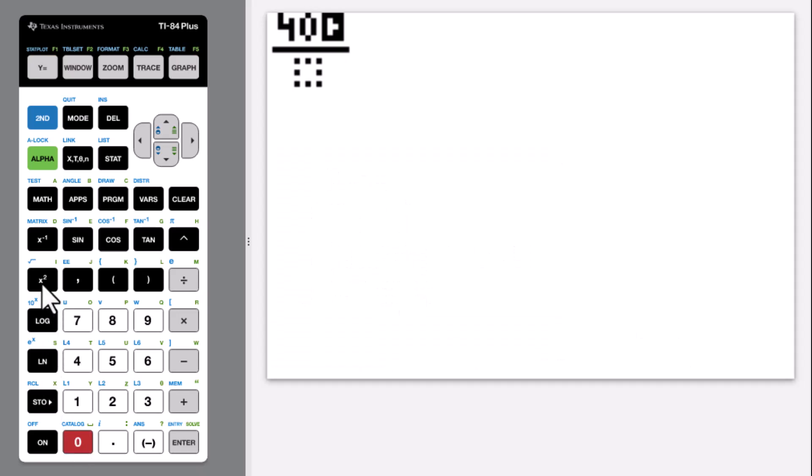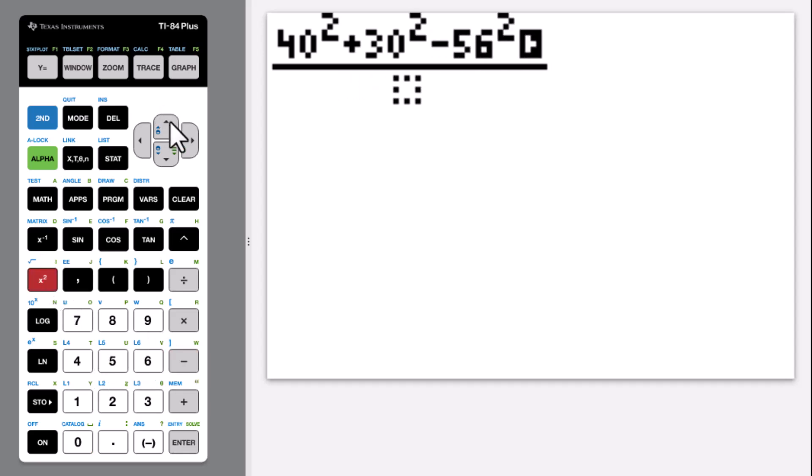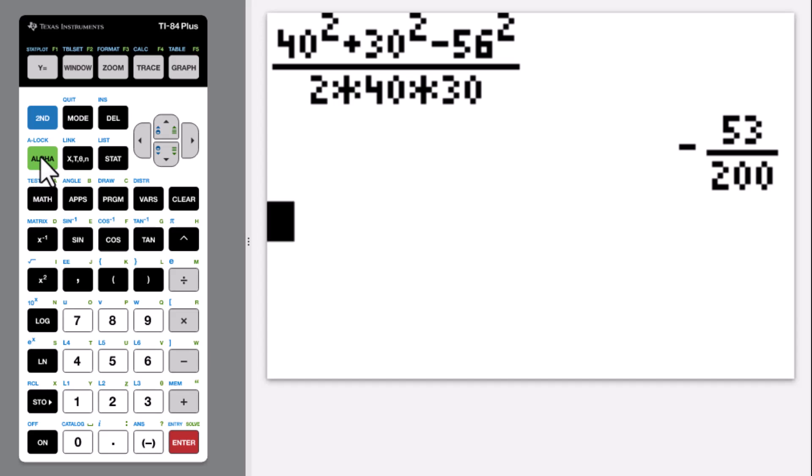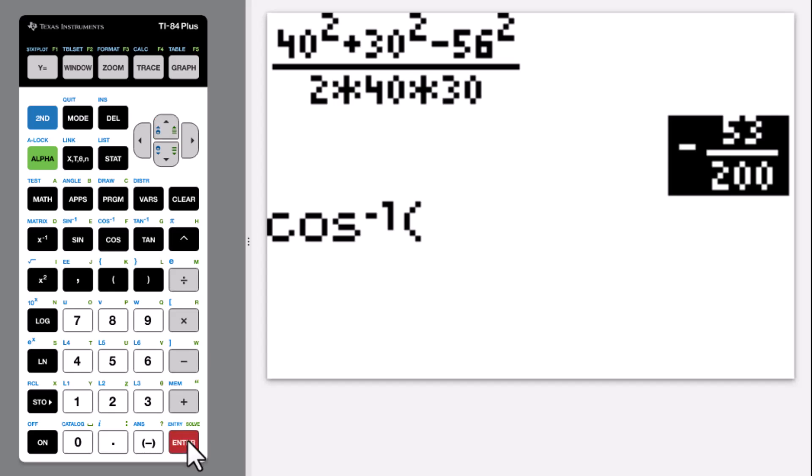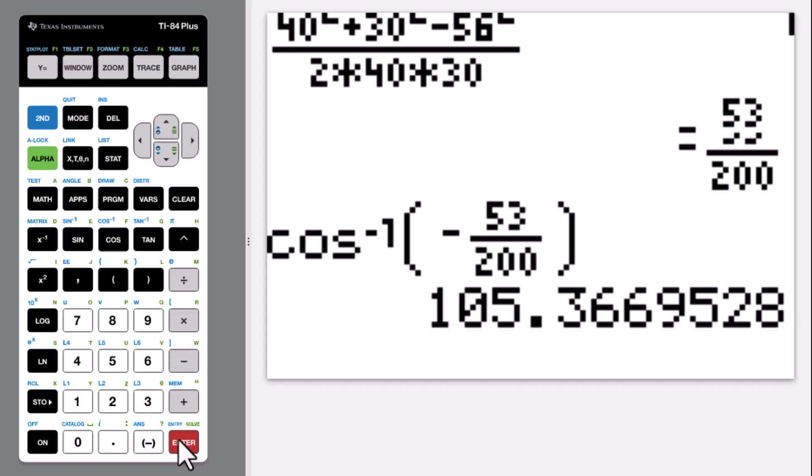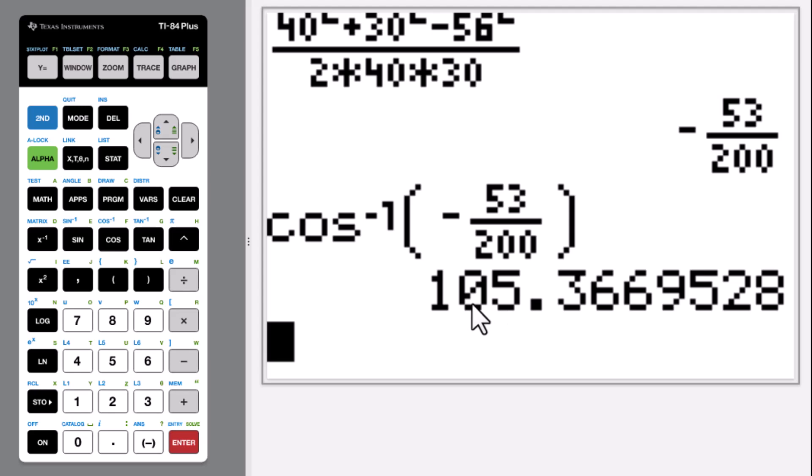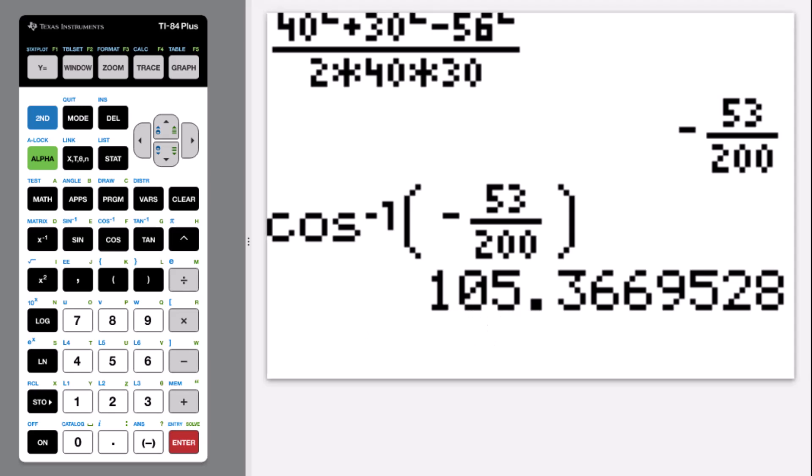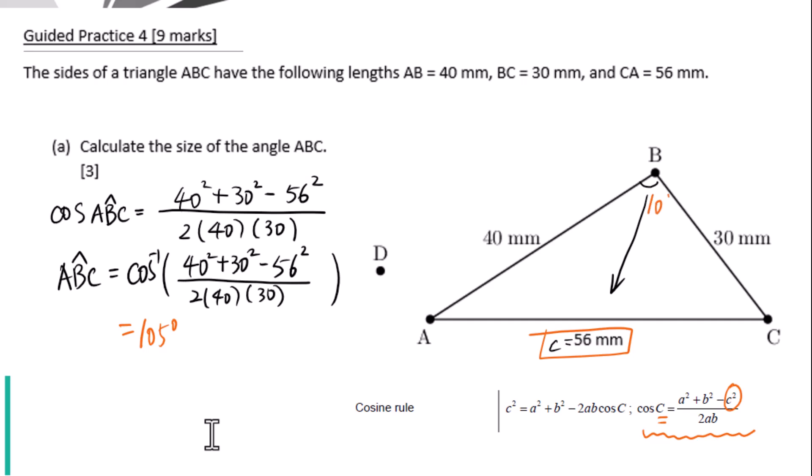40 square plus 30 square minus 56 square over 2 times 40 times 30, enter. Second cosine. Answer is 105 degrees. Let's label this as 105 degrees.